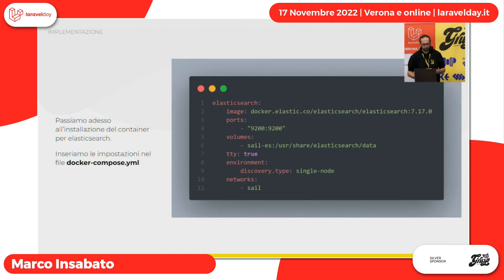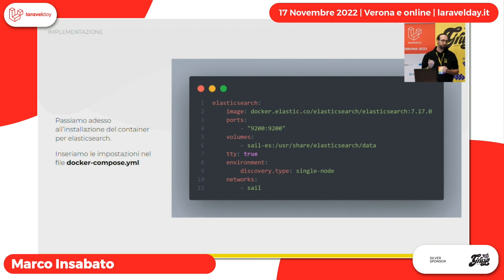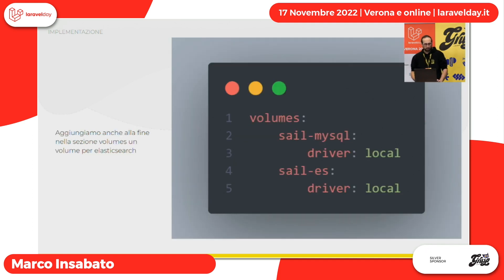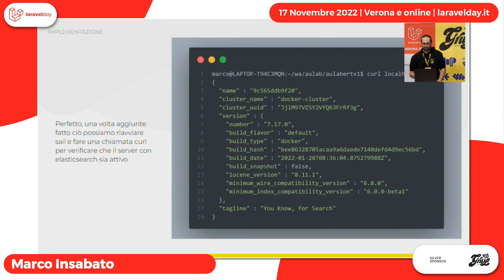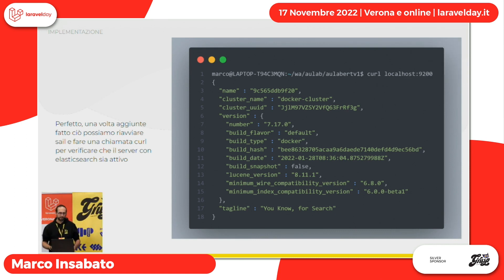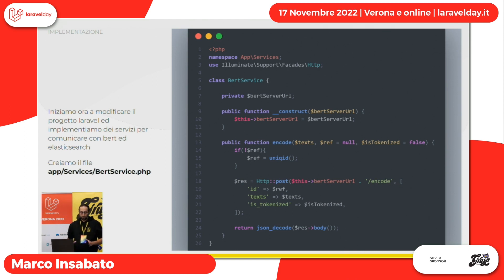Passiamo all'installazione del container per Elasticsearch. Inseriamo le impostazioni nel file Docker, prendendo Elasticsearch versione 7.17, che è necessaria — non una inferiore, mi raccomando, perché ha una funzione necessaria per fare la ricerca che ci serve. Aggiungiamo anche i volumi. Una volta riavviato Docker, Elasticsearch dovrebbe partire, e con una semplice chiamata curl possiamo vedere se il server ci risponde. Se risponde, vuol dire che è andato tutto a buon fine.